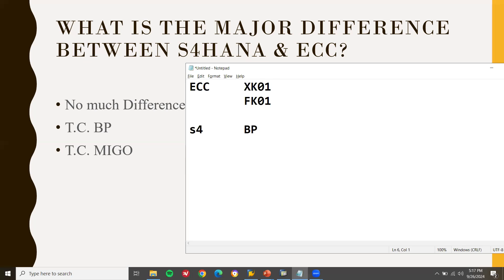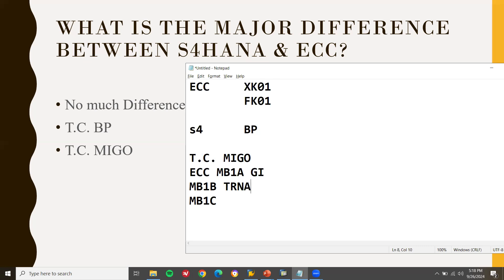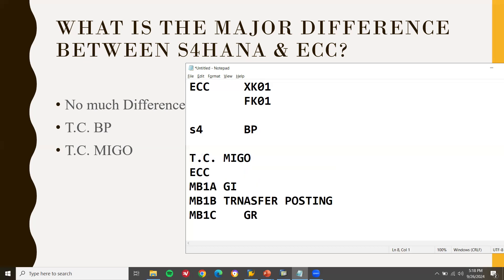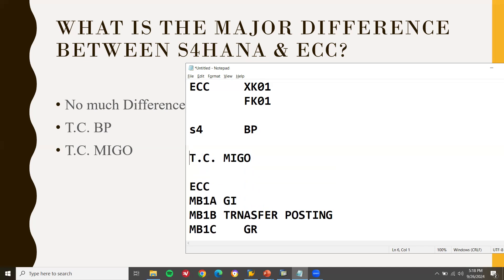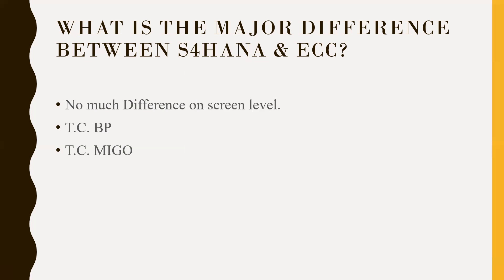Another difference is the transaction code. In S4HANA, you have only MIG. But in ECC, you have MB1A, MB1B, MB1C — for goods issue, transfer posting, and goods receipt. All three transaction codes exist in ECC, but in S4HANA they have been removed and consolidated into MIG. Whatever you want to do — goods issue or transfer posting — you can do it only in MIG. These are the two major differences you can speak about.